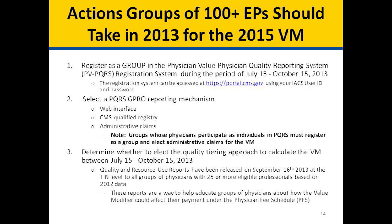Step 3: Determine whether to elect the quality tiering approach to calculate the Value Modifier, between July 15 and October 15, 2013. Quality and Resource Use Reports have been released on September 16, 2013 at the TIN level to all groups of physicians with 25 or more eligible professionals based on 2012 data. These reports are a way to help educate groups of physicians about how the Value Modifier could affect their payment under the Physician Fee Schedule.